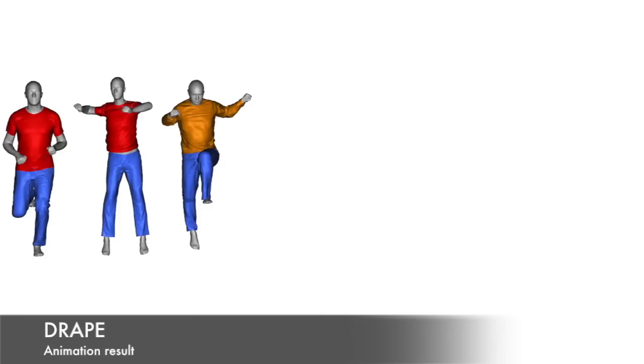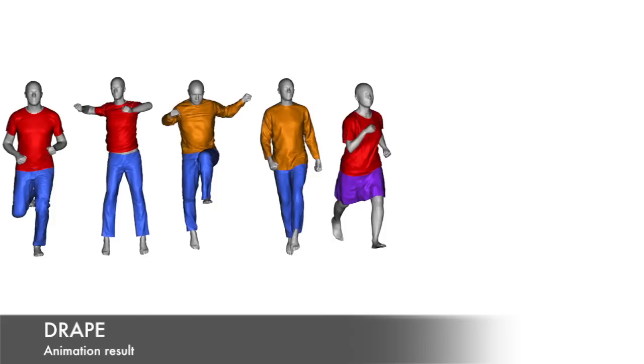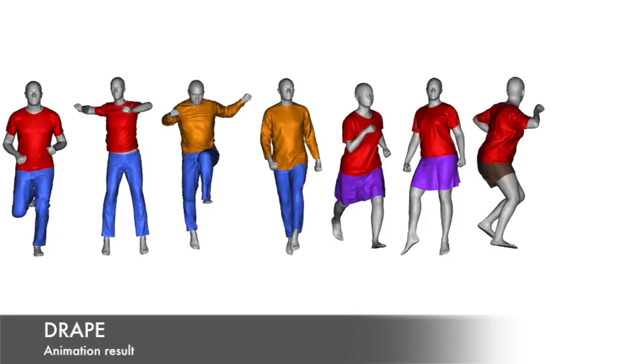Drape is a learned model of clothing that allows people of any shape to be dressed in any pose. Realistic clothing shape variation is obtained without physical simulation, and dressing any body shape is completely automatic.